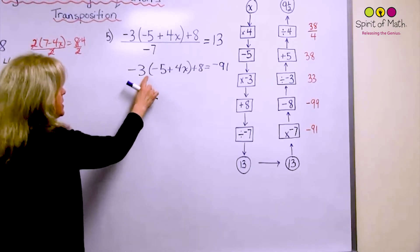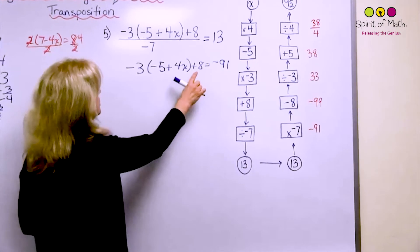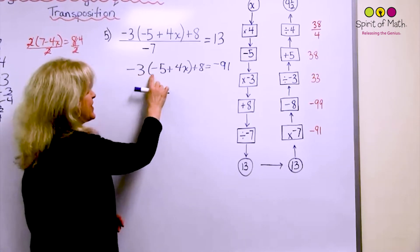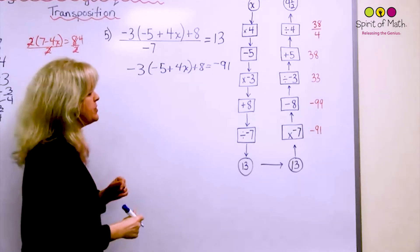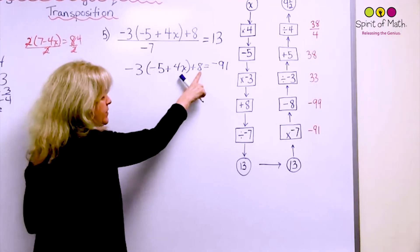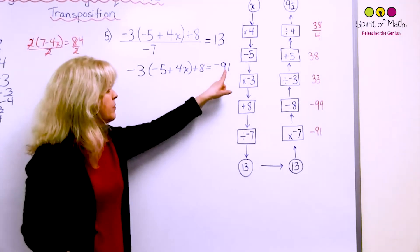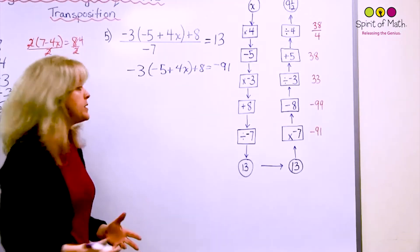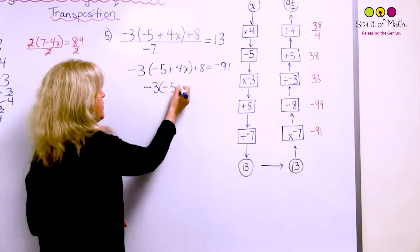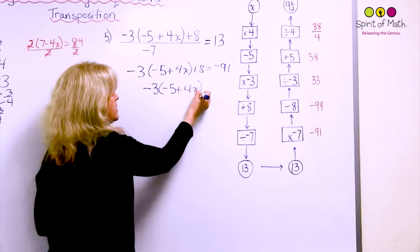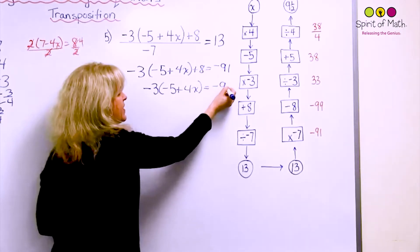And now this says times negative 3. The opposite is divide by negative 3. Sorry. Before that, because this is multiplication, that's tighter to that x. This plus 8 would be what we do first. So we want to get rid of that plus 8. The opposite of plus is minus. So we put on that side. It becomes minus 8. So we rewrite this. 3 times negative 5 plus 4x is equal to negative 91 minus 8, which is negative 99.